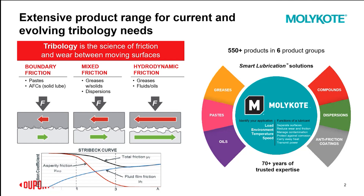Around the outside, you can see we have greases, pastes, oils, compounds, dispersions, and anti-friction coatings. We're going to be diving into the anti-friction coatings. To better understand where those are best applied, you need to understand a little bit about tribology. On the left over here, we have the three different friction regimes: boundary friction, mixed friction, and hydrodynamic friction.